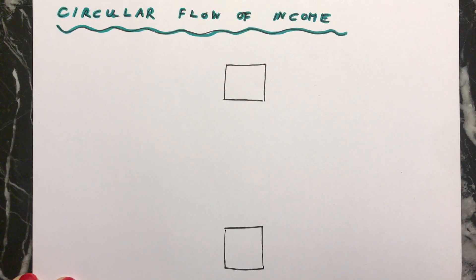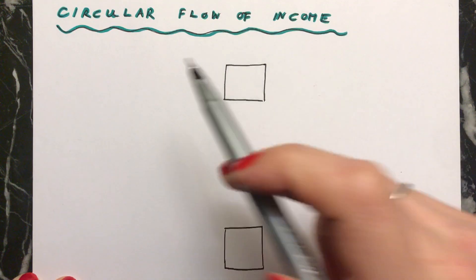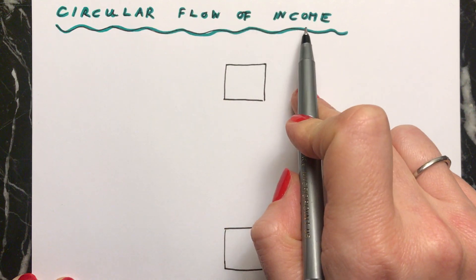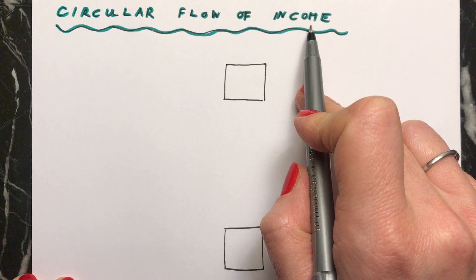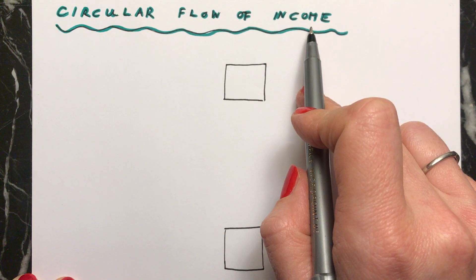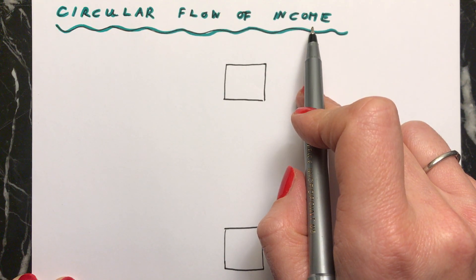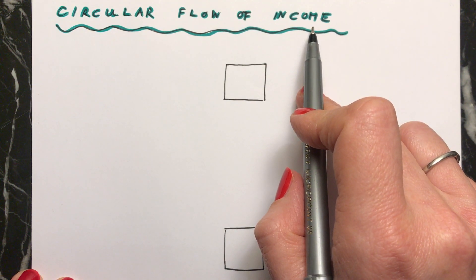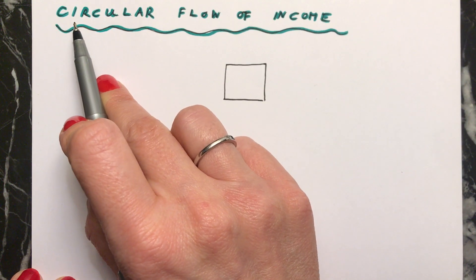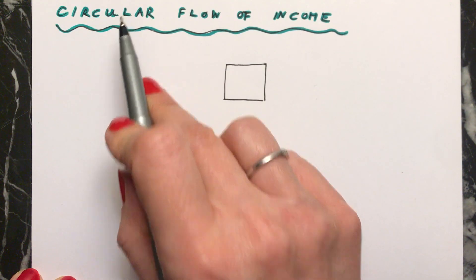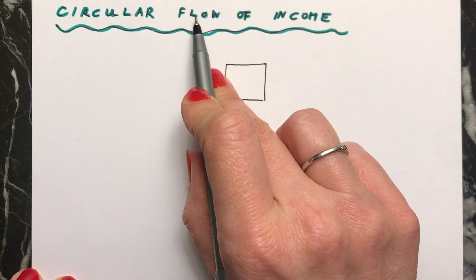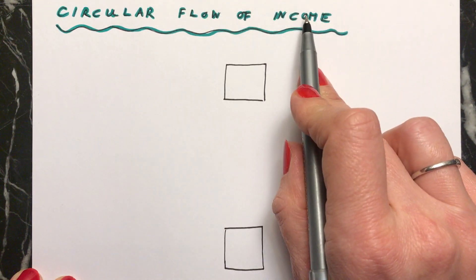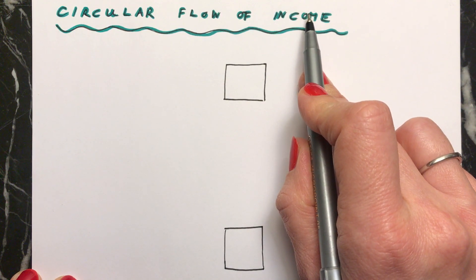Hi everybody. This is a video to explain how the circular flow of income works. This is a very simplified explanation of how money flows round an economy — all the money that there is within an economy. The money goes round in circles, as we'll see in a moment, and it flows round in this circle, and it's income, as you'll see in a moment.